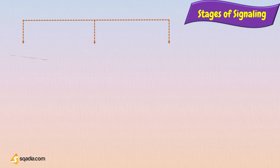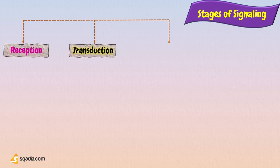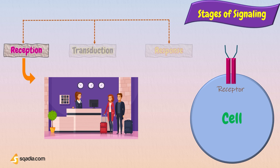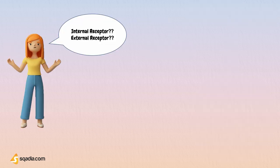Now coming to the stages of the cell signaling pathway. Reception — receiving something. Like how guests at a hotel go to the reception first, where staff receive and greet them. From a physiological point of view, in this step a signal is received by the cell. It happens when a ligand or signaling molecule binds to a receptor on the surface or inside of the cell. A ligand binds to the external receptor of a cell.